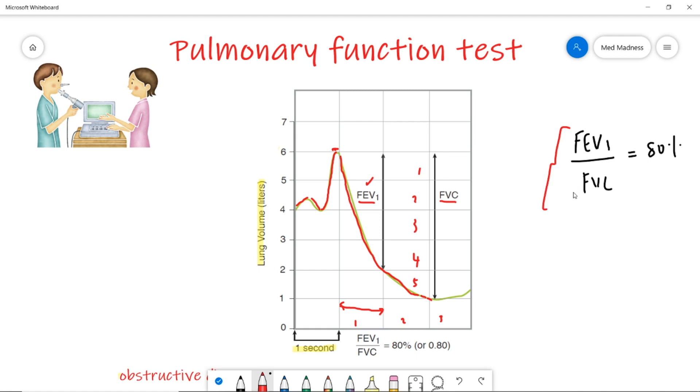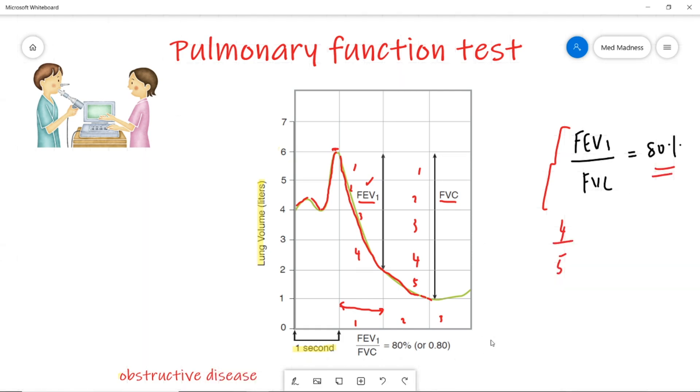Why we are comparing these two? Because we can find whether the patient have obstructive or restrictive pattern. The normal FEV1-FVC ratio is about 80%. What is the normal FEV1 here? 1, 2, 3, 4. So, 4 divided by 5 is 80%.